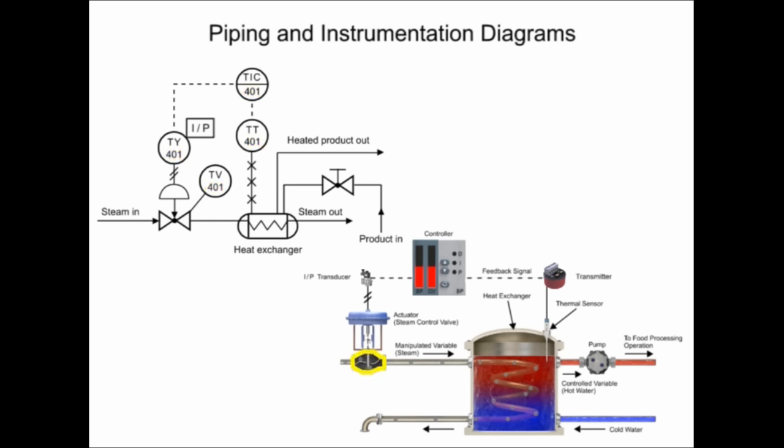The valve that allows steam to flow through the pipe is the symbol with two triangles. In the top portion of the symbols is the functional identifier, and the first letter denotes the measured variable. The first letter of each functional identifier is the letter T, which defines the process of temperature control.